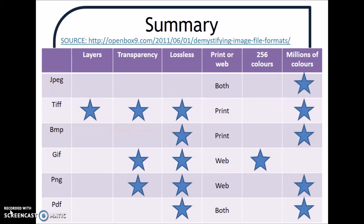That's just a brief summary. I've summarised it including the source, just to help you get an idea of how each file format works. I've included whether it has layers, transparency loss, whether it's lossless or lossy — so JPEG is lossy because it gets rid of data it doesn't feel it needs — where it's useful, and the colour range as well.